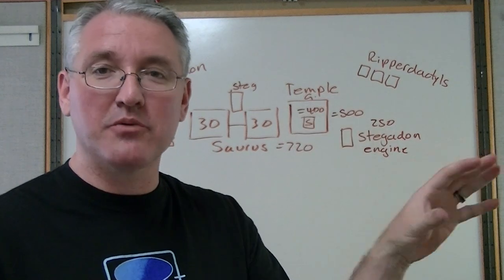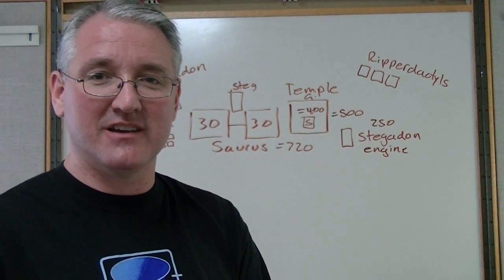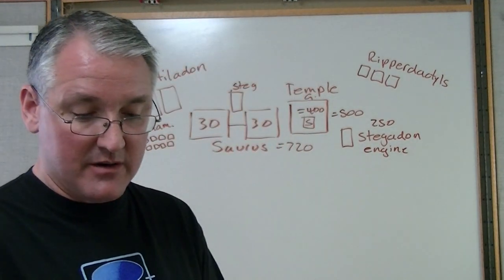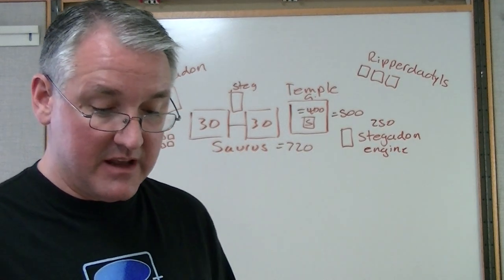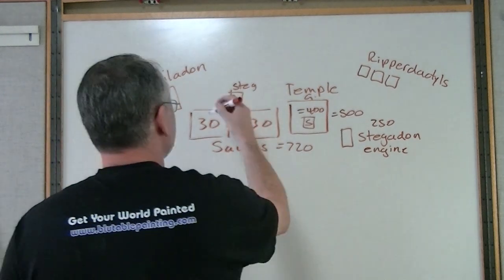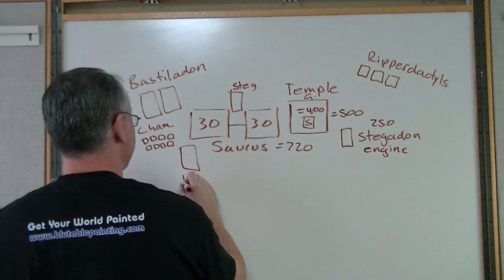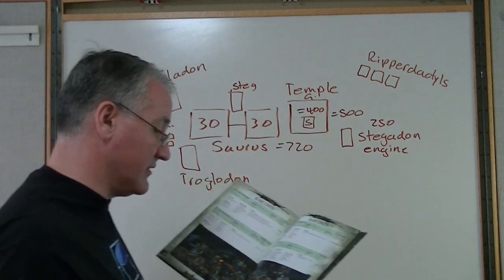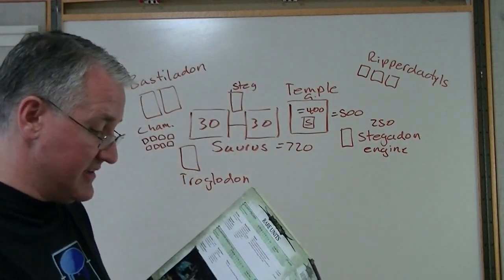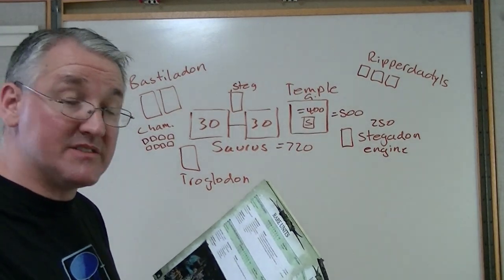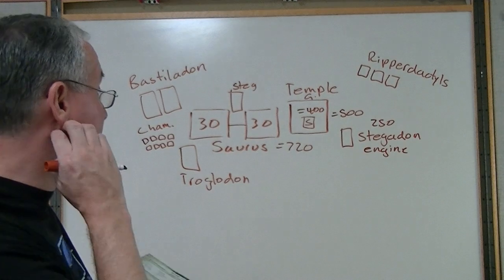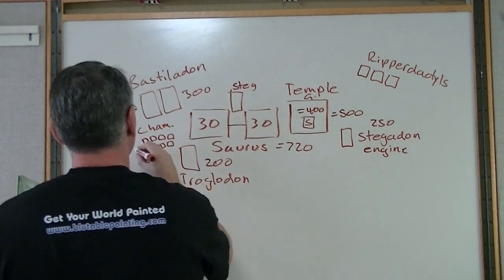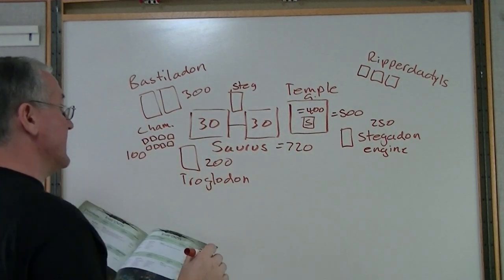All right let's continue with the army. In rares I did pick up a Troglodon and that is, I'm going to run them pretty close to here. In fact let's put him up here. Now unfortunately apparently this doesn't count as a skink character even though it has this Skink Oracle that rides on him. So so much for that. But he does have a roar which gives him predatory fighter on a five or a six. And the Troglodon is 200 points. You've got 300 here, the chameleons I don't know let's call that a hundred.